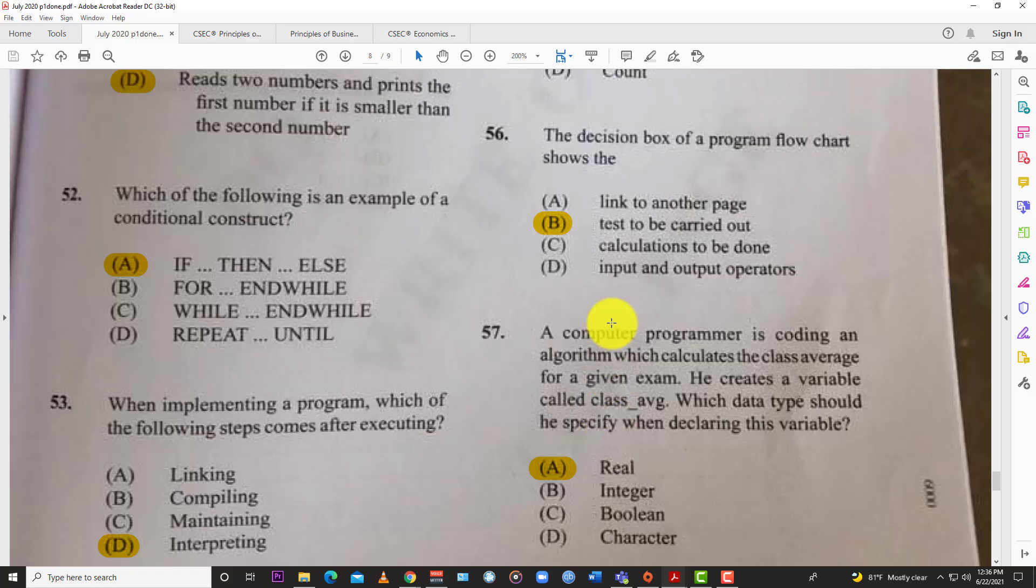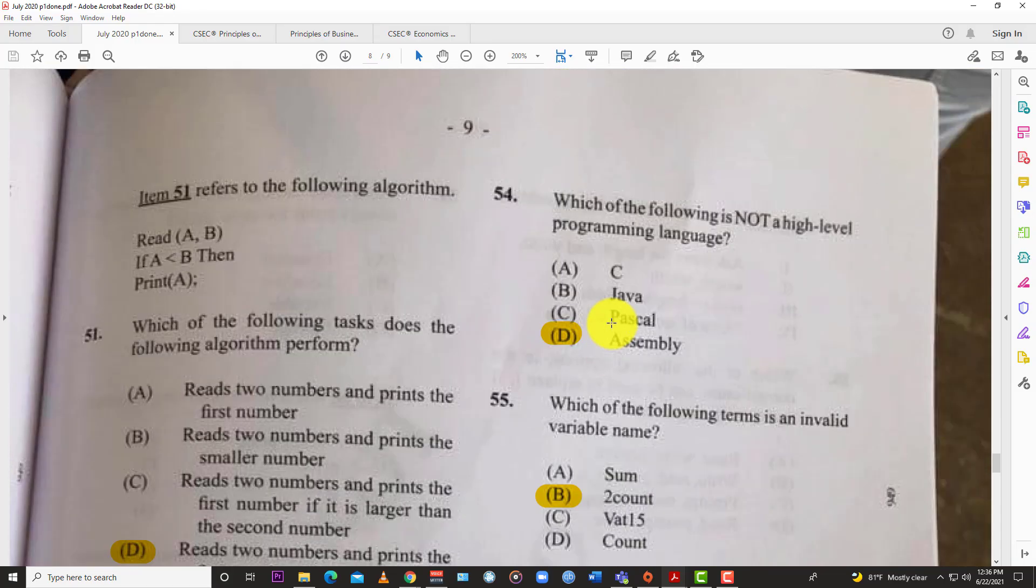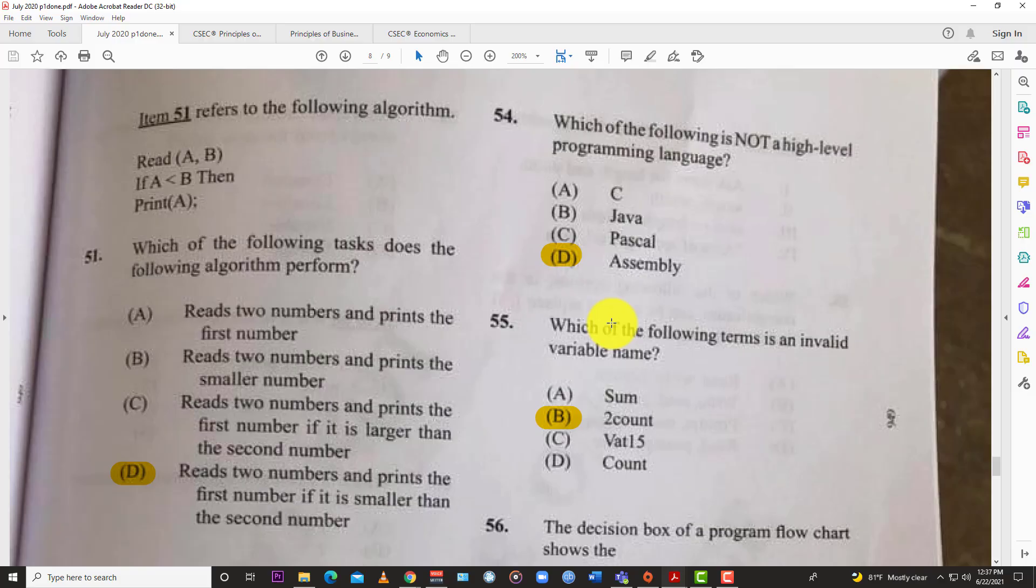Question 54: Which of the following is not a high-level programming language? You have C, Java, Pascal, or D, which is the answer: assembly. Assembly, that's the answer.